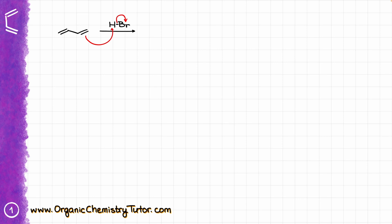That's going to give me two possible carbocations. One carbocation is going to be a primary carbocation, the result of the hydrogen being attached to that carbon. My other possibility is a carbocation that is a secondary carbocation, the result of my hydrogen attacking the other carbon. Naturally, the primary carbocation is very unstable, so I'm going to discard that right away. The secondary carbocation is a much more stable example.